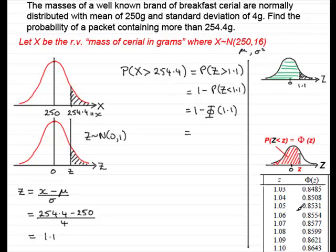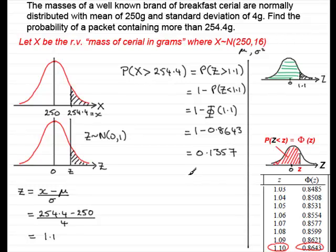From the tables, we look up z = 1.1, and the corresponding Φ(1.1) = 0.8643. So the probability is 1 − 0.8643 = 0.1357. Since the tables are only four-figure tables, we round to 3 decimal places, giving 0.136. So the probability that X is more than 254.4 grams is 0.136, and hopefully you'll be able to model any similar examples using this method.